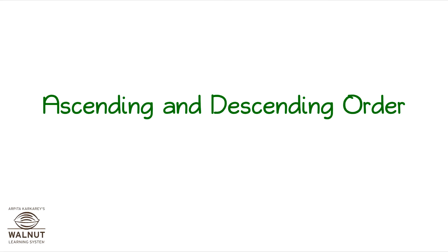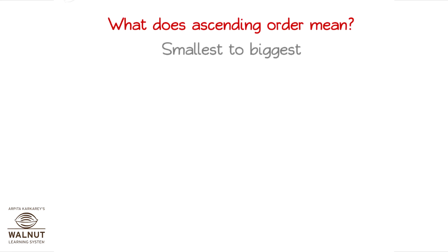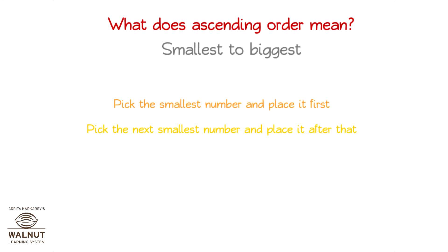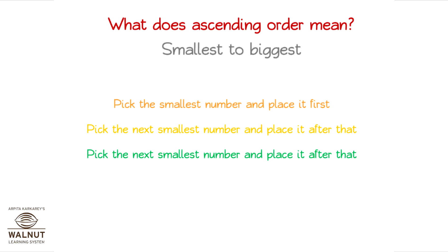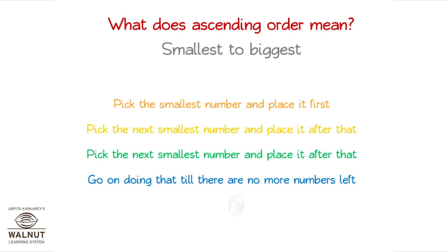Ascending and Descending Order — Number Work. When we have to arrange numbers in ascending order, what do we do? These are the steps to follow. Pick the smallest number and place it first. Pick the next smallest number and place it after that. Go on doing that till there are no more numbers left.